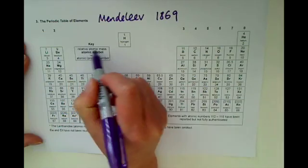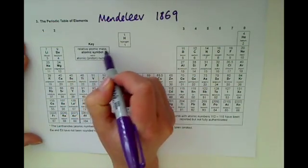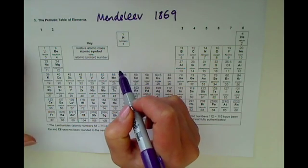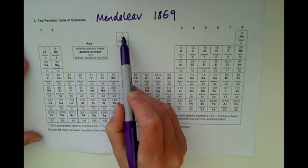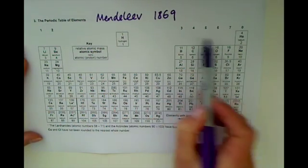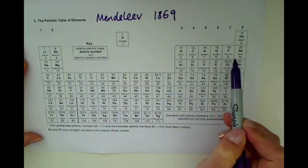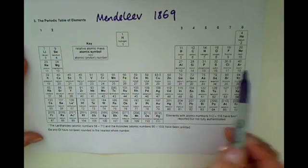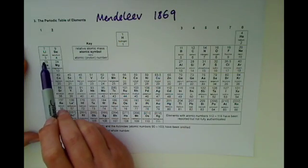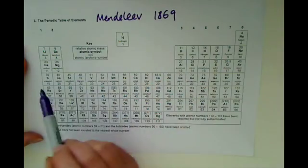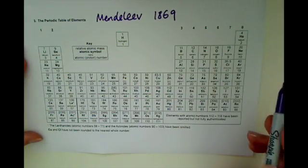The top number is called the relative atomic mass. So this is like showing us how big the atom is, and you'll see that these also increase from left to right as you go along. So seven, nine, eleven, twelve, fourteen, sixteen, nineteen, twenty for example. That's given us an indication that the atoms get bigger as you move from left to right across the periodic table.